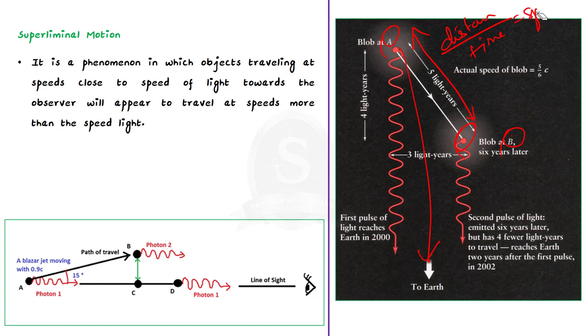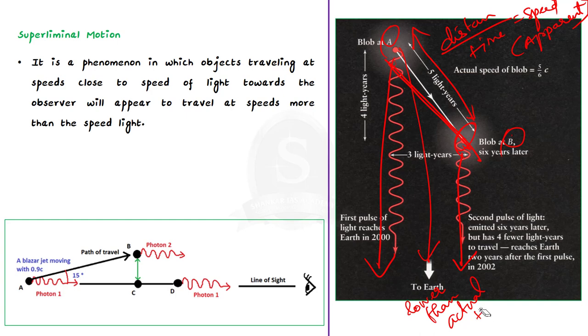Using this method, we can find only the apparent speed of stellar objects. This is because if the stellar object is moving at very high speed towards us, the time taken for light to reach Earth from point A is longer than the time taken for light to reach Earth from point B. Due to this, the time taken that is observed on Earth appears to be lower than the actual time taken.